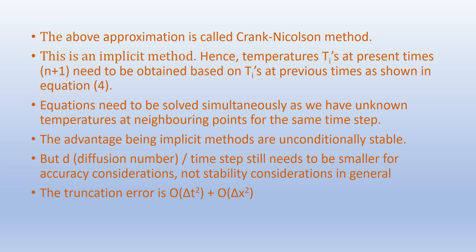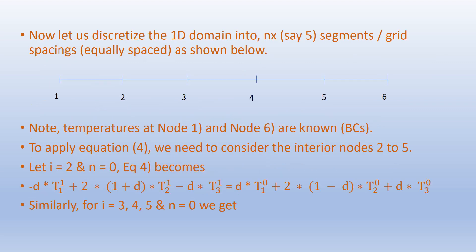Now let us discretize the 1D domain into nx, or 5, segments with equally spaced grid spacings. Note that temperatures at node 1 and node 6 are known — these are the boundary conditions. To apply Equation 4 we consider interior nodes 2 to 5. For i=2, n=0, Equation 4 becomes: -d·T_{1,1} + 2(1+d)·T_{2,1} - d·T_{3,1} = d·T_{1,0} + 2(1-d)·T_{2,0} + d·T_{3,0}. Similarly for i = 3, 4, 5 and n = 0, we get corresponding equations.